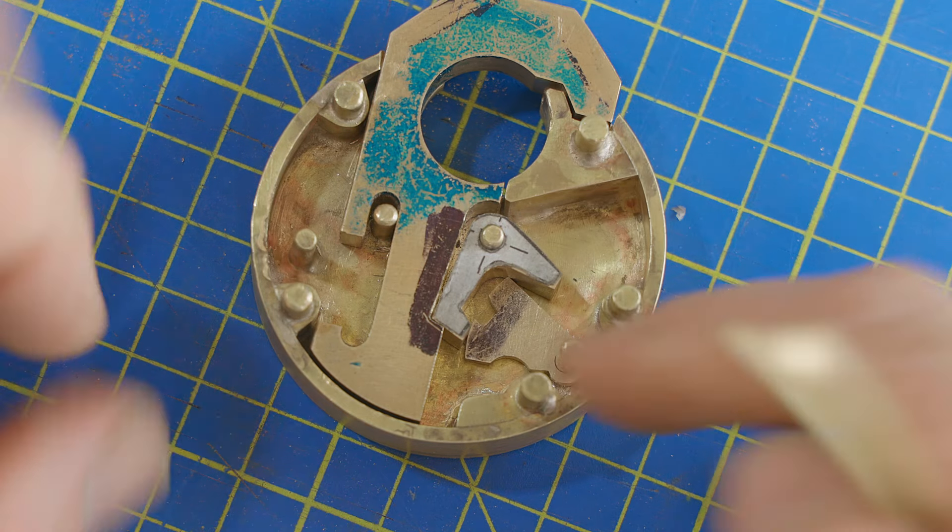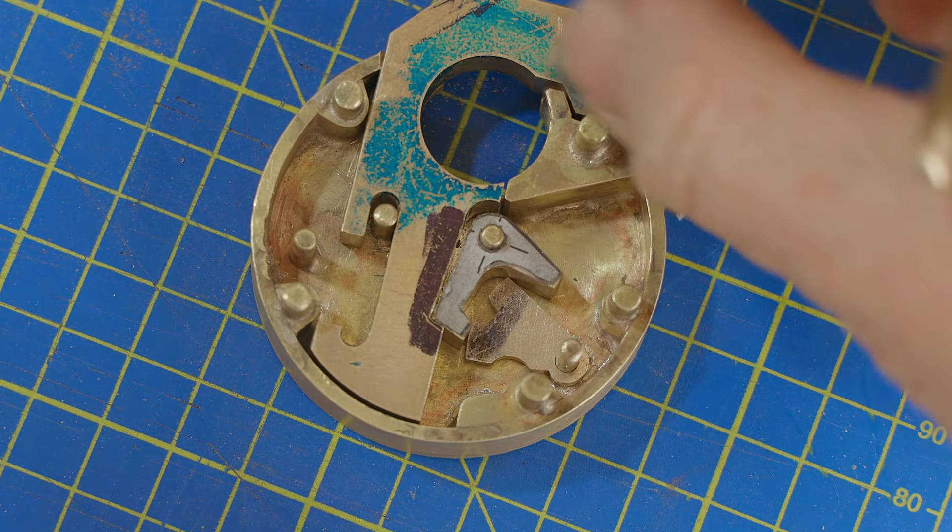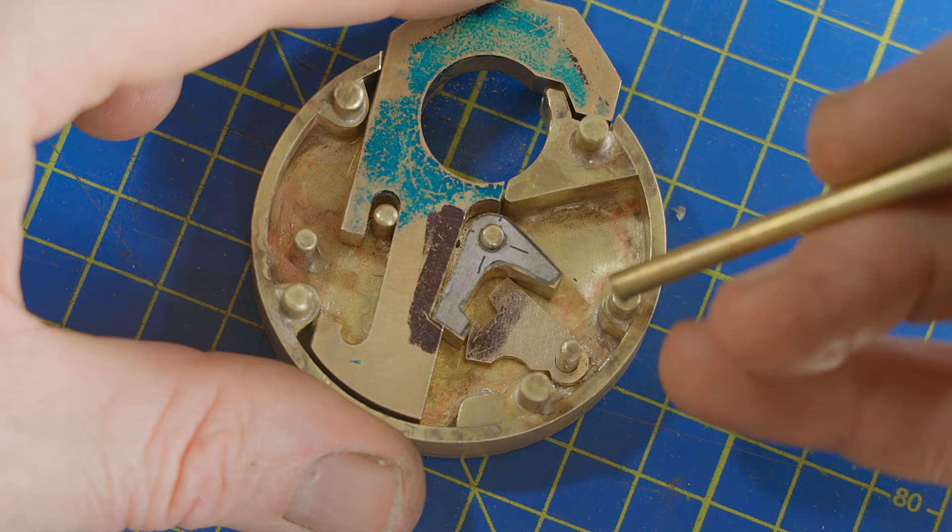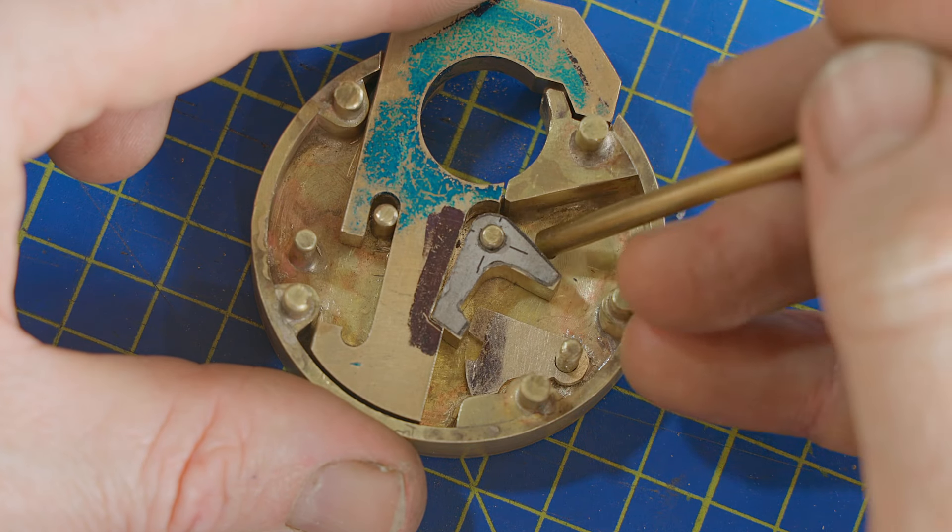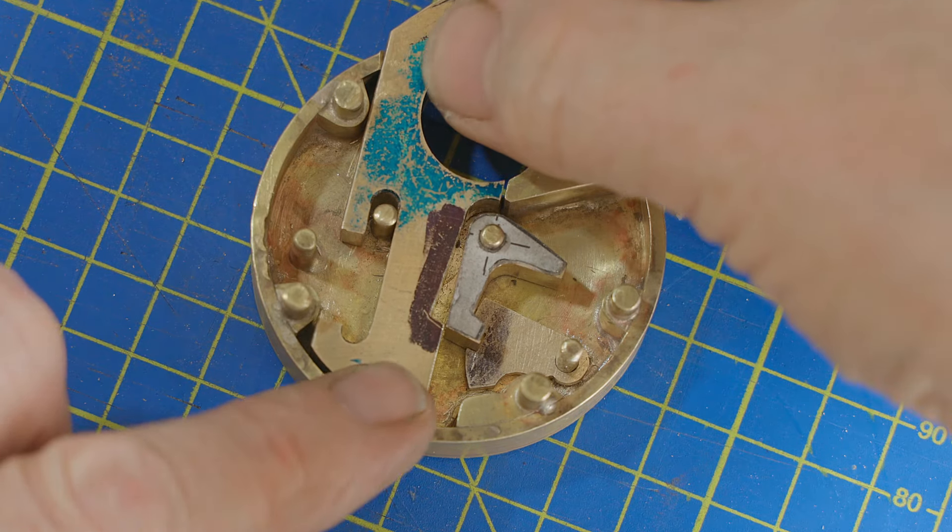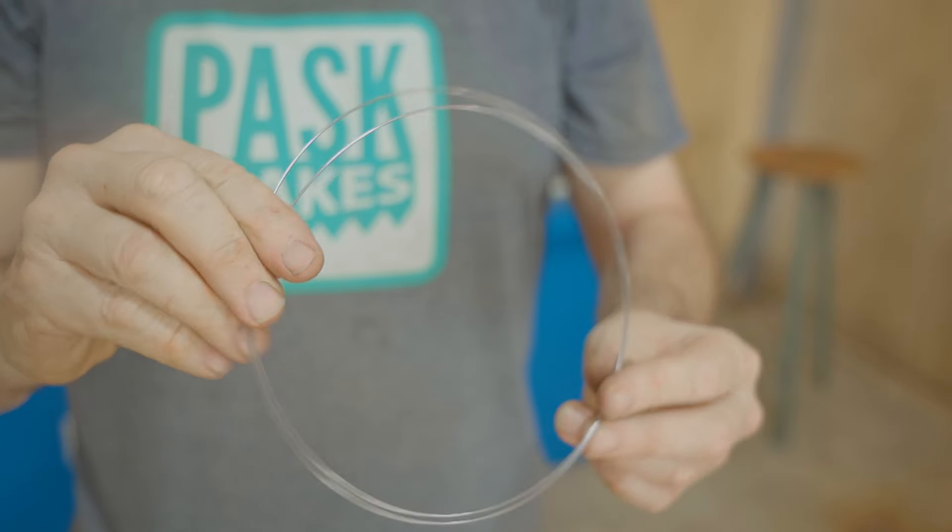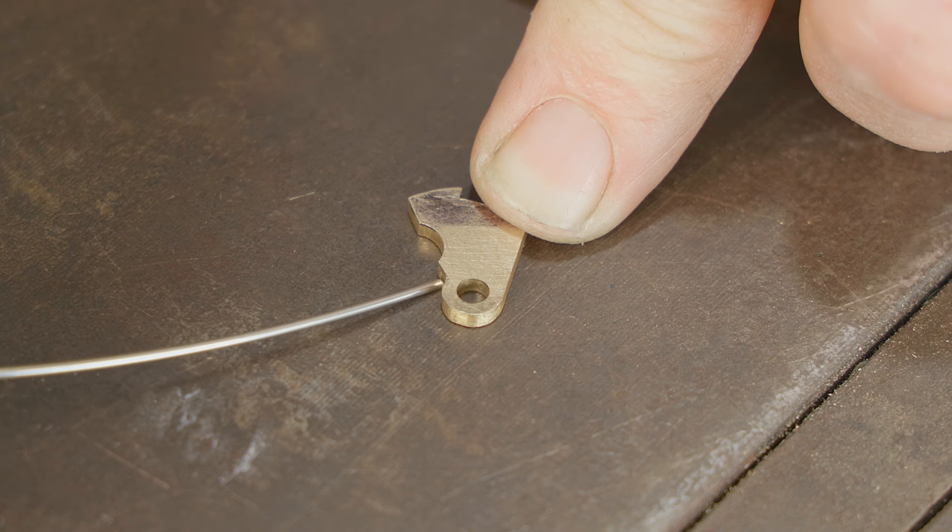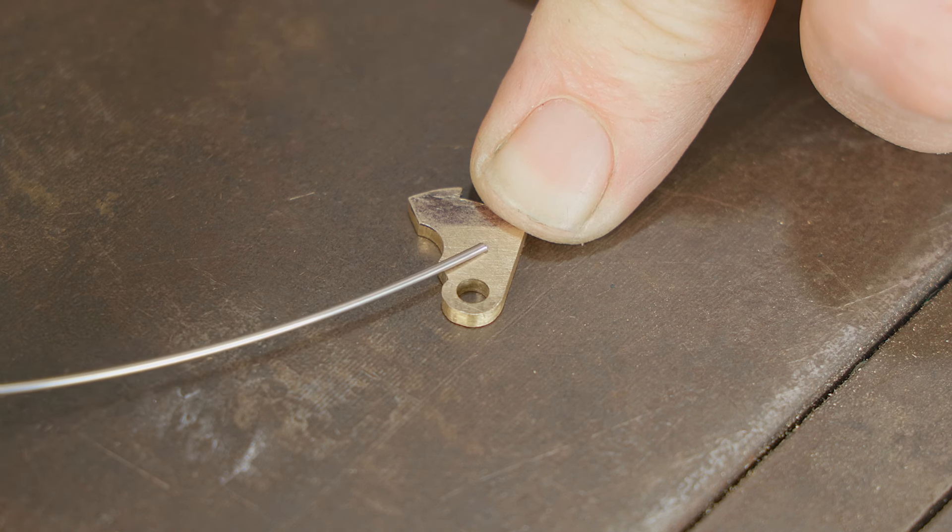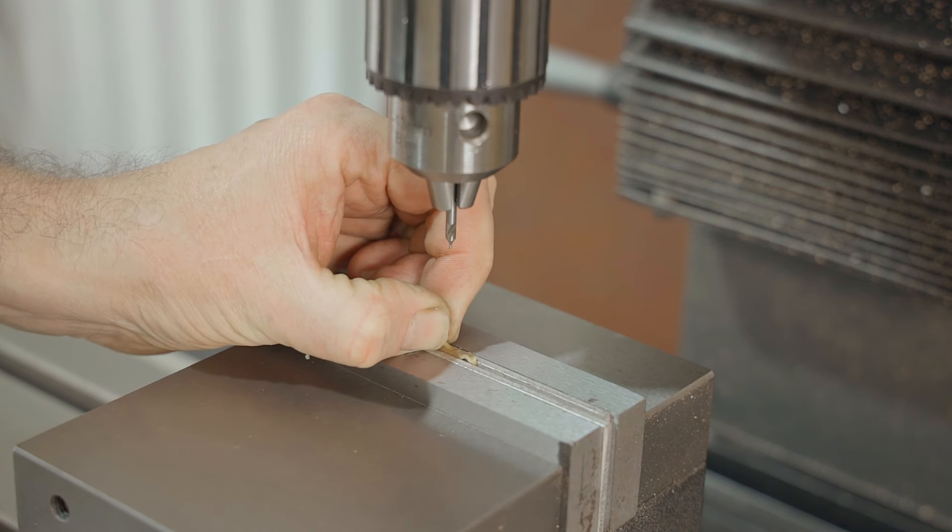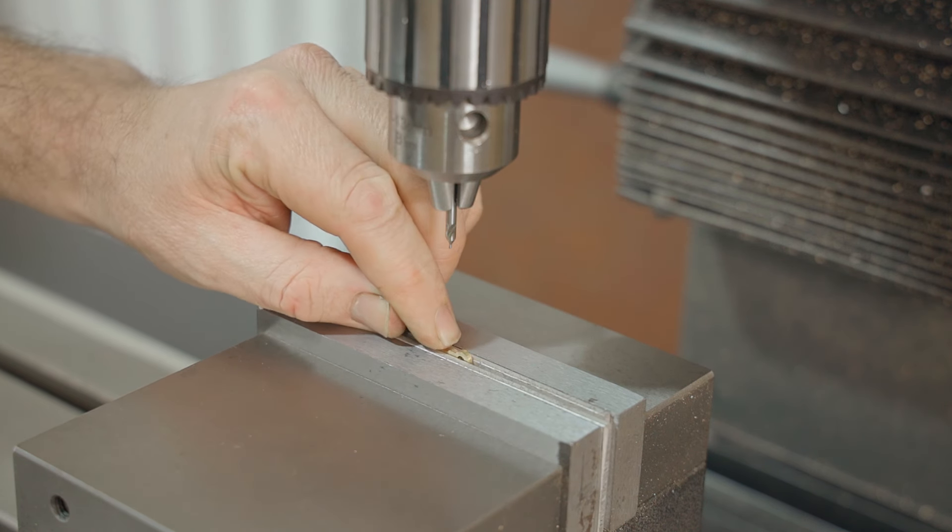When the bolt enters the recess in the shackle the padlock is locked, and when the bolt enters the gate and the levers it releases the shackle and the padlock is unlocked. Next I need to make a spring for the lever and I'll do that from this piece of one millimeter piano wire. To fit the spring I'll drill a one millimeter hole, I'll do that six millimeters deep into the lever.